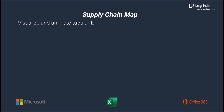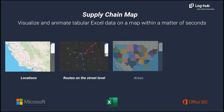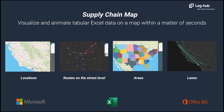To answer these questions, we will use the Supply Chain Map — the unique tool to visualize and animate tabular Excel data on a map within a matter of seconds. It provides the possibility to visualize locations, routes on the street level, areas, and lanes.